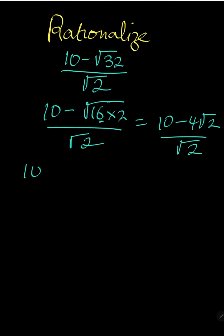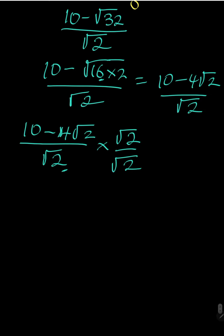We can now rationalize as we have 10 minus 4√2 all over √2. To rationalize this, we take the denominator which is √2 and use it to multiply both the numerator and denominator of this fraction. Because whatever you do to the numerator and also do to the denominator of the same fraction, the value has not changed.